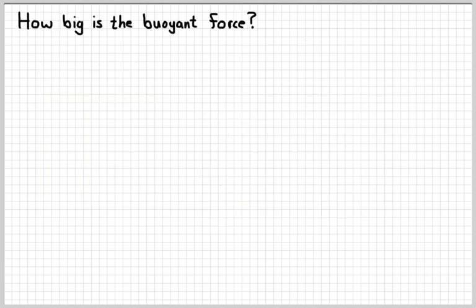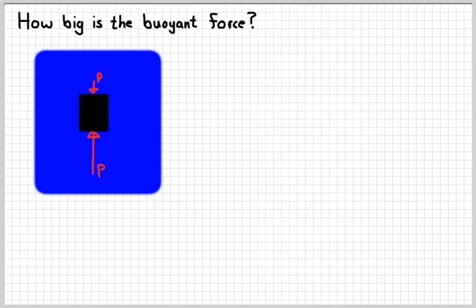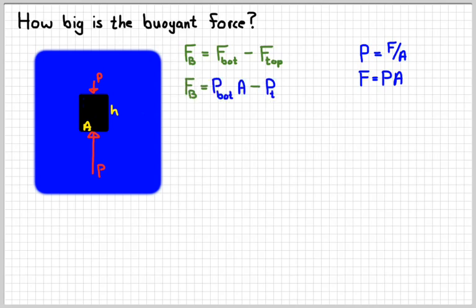So, the next question we might want to ask is, how big is the buoyant force? Taking the same object, I'm going to ignore the sideway pressures because they balance each other out. We have the pressure on bottom pushing up, pressure on top pushing down. I'm going to label the dimensions. This object has an area A and a height H. The buoyant force is just the difference between the force on the bottom and the force on the top. Remember that pressure is force divided by area. I can find a force if I know an area and I know what the pressure is. I'm going to say that the force due to the water is equal to the pressure on the bottom times the area minus the pressure on top times the area. We can factor that area out.